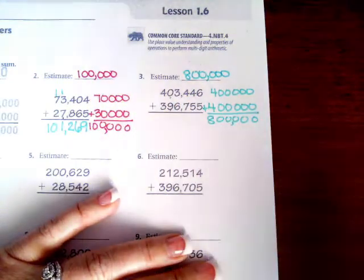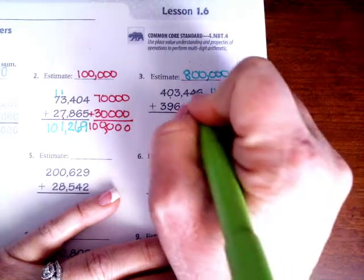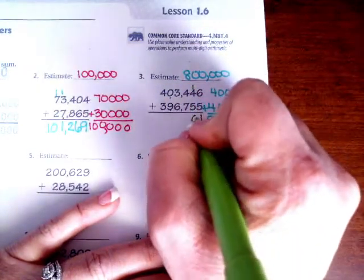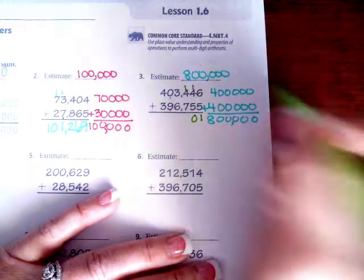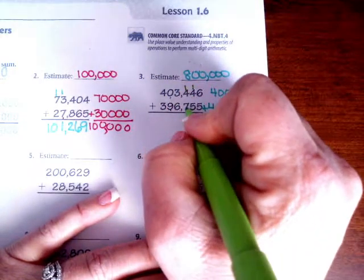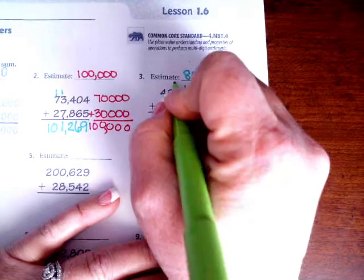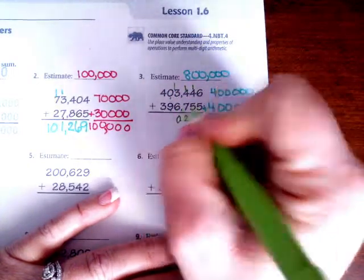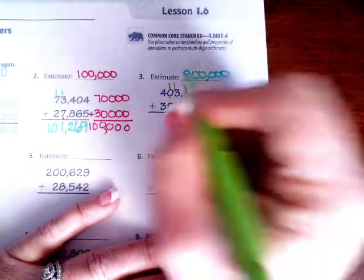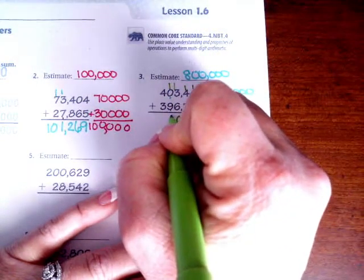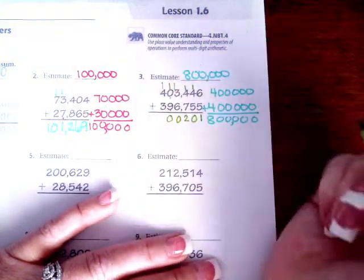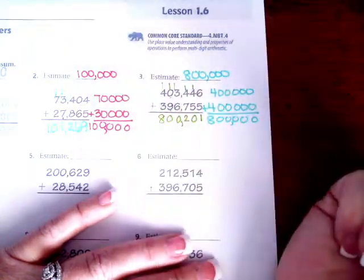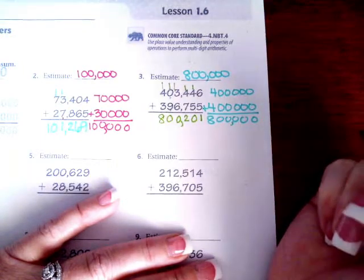Okay, now let's do some real math. Six plus five is 11. I'm going to carry my one. One plus four is five, plus five more is 10. I'm going to carry my one again. One plus four is five, plus seven is 12. I'm going to carry my one again. One plus three is four, plus six is 10. I'm going to carry my one again. One plus nine is 10. I'm going to carry that one one last time. One plus four is five, plus three is eight. 800,201. Pretty close.